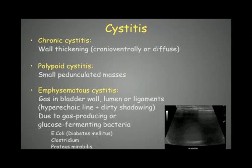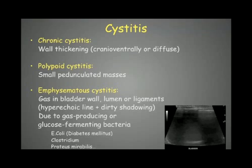In the bladder, we can have different problems. The most common are cystitis. With acute cystitis, we generally don't see anything on the ultrasonographic examination. With chronic cystitis, we can see wall thickening, which is more prominent on the cranial ventral aspect of the bladder. Sometimes, though quite rare, cystitis can be polypoid — with small pedunculated masses — and we will have to differentiate that from neoplasia.